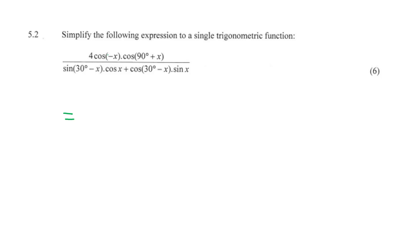Deal with the numerator first for now. Well, cos(-x), if we just take a look at our cos diagram again, remember we measure positive angles this way, so we measure negative angles this way. So that's just a negative angle, so it's just going to be cos(x).